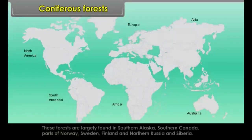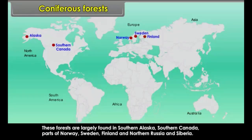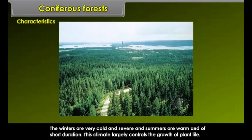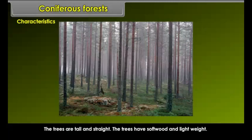Coniferous Forests are largely found in southern Alaska, southern Canada, parts of Norway, Sweden, Finland and northern Russia and Siberia. The winters are very cold and severe and summers are warm and of short duration. This climate largely controls the growth of plant life. Due to low rainfall and severity of winters, the plant growth is very slow. The trees are of evergreen type with small needle-like leaves, tall and straight.